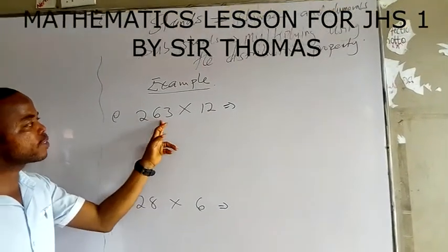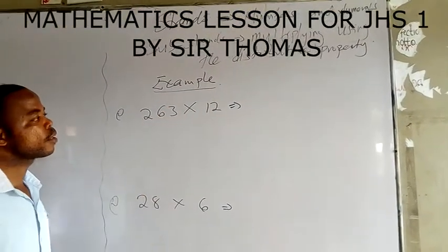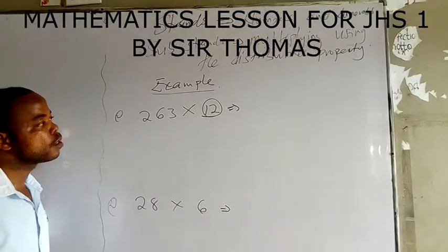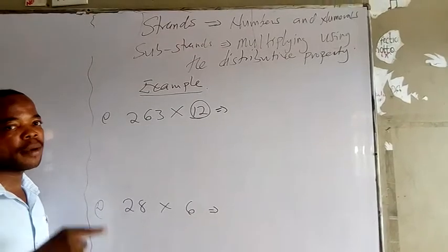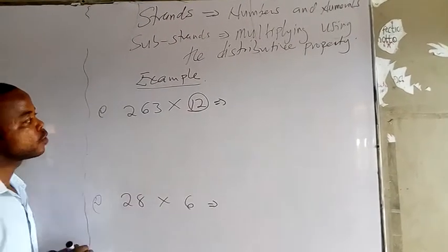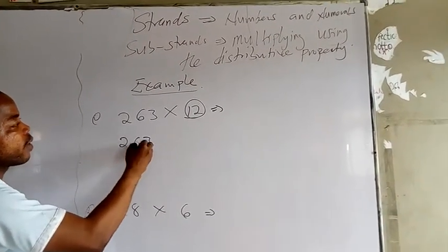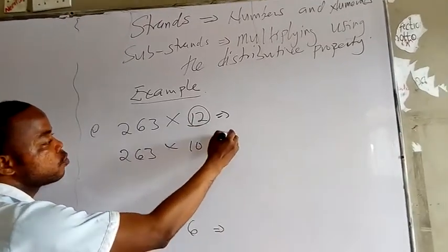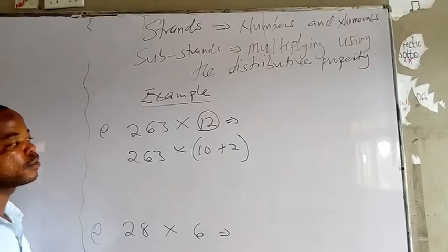So look at this, I have 263 times 12. Now this number that we have here, which I have set it as 4, we can reduce it with two numbers when we are adding to get the number 12. So I have 263, now times, this can be written as 10 plus 2.